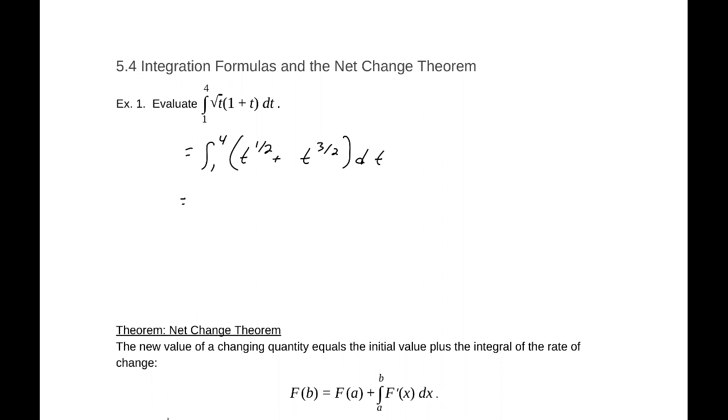The antiderivative there, again with c equal to 0, is going to be t to the 3 halves. And it will be 2 thirds t to the 3 halves, dividing by the 3 over 2, plus t to the 5 over 2, and that will be 2 fifths.